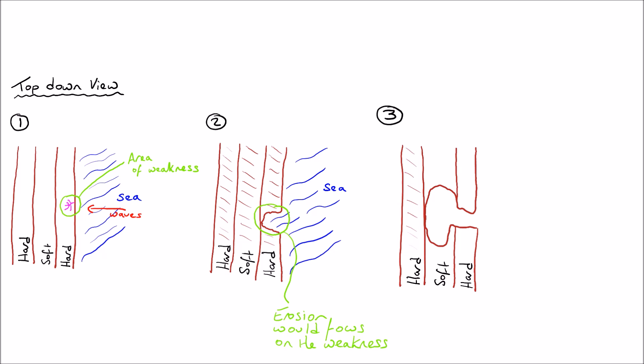And it expands inwards, as you can see in the third labelled diagram. This is the actual cove that is formed because it erodes much faster and it forms that horseshoe shape, you could call it.